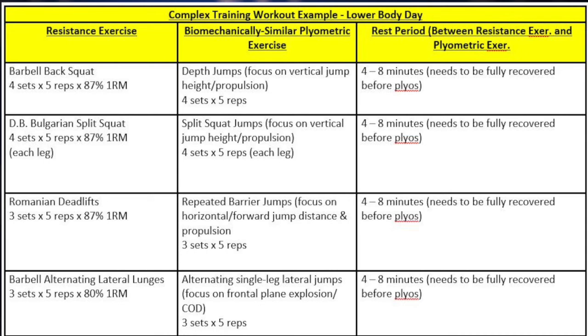The third resistance exercise is Romanian deadlifts — one set of five reps at 87% of one rep max, really trying to activate the central nervous system, peripheral, and muscular system. After a four to eight minute rest, the paired plyometric exercise is repeated barrier jumps — hopping over barriers and working on horizontal or forward propulsion of the body. This contrasts with the previous two pairings which focused on vertical propulsion. Romanian deadlifts train the hip extensors — the glutes and hamstrings — which are great for generating horizontal force, paired appropriately with horizontal barrier hops.